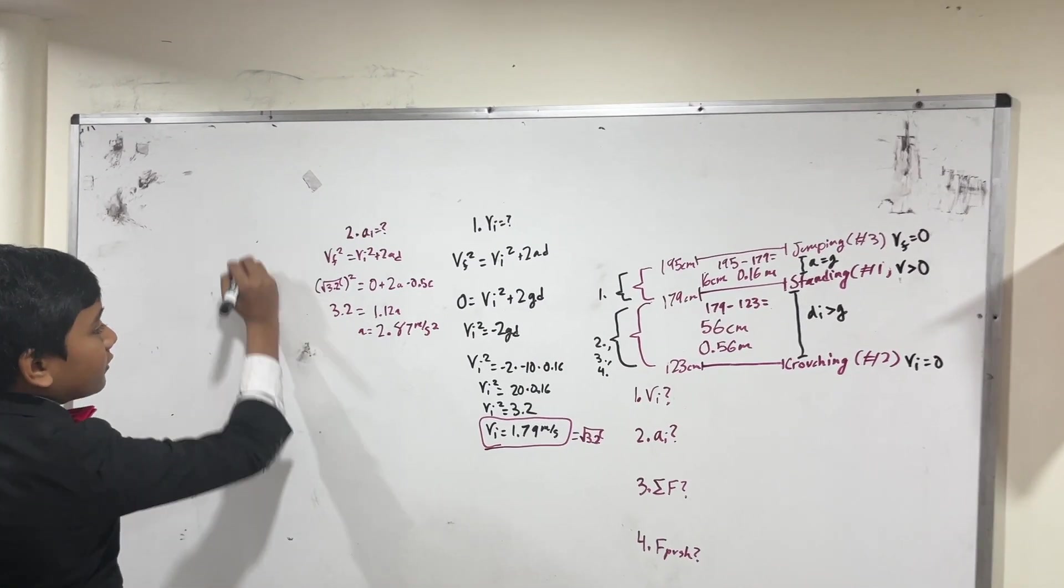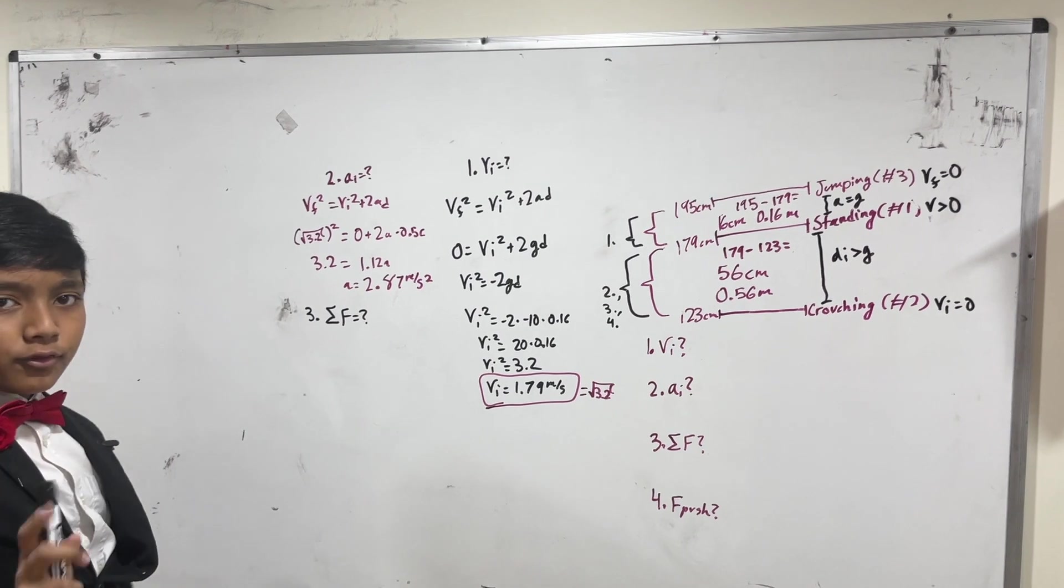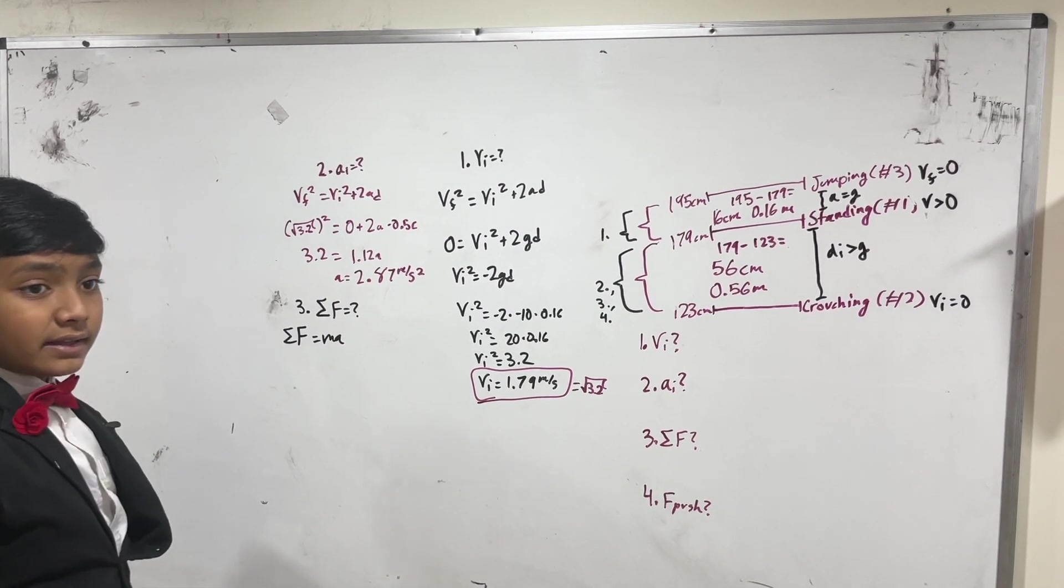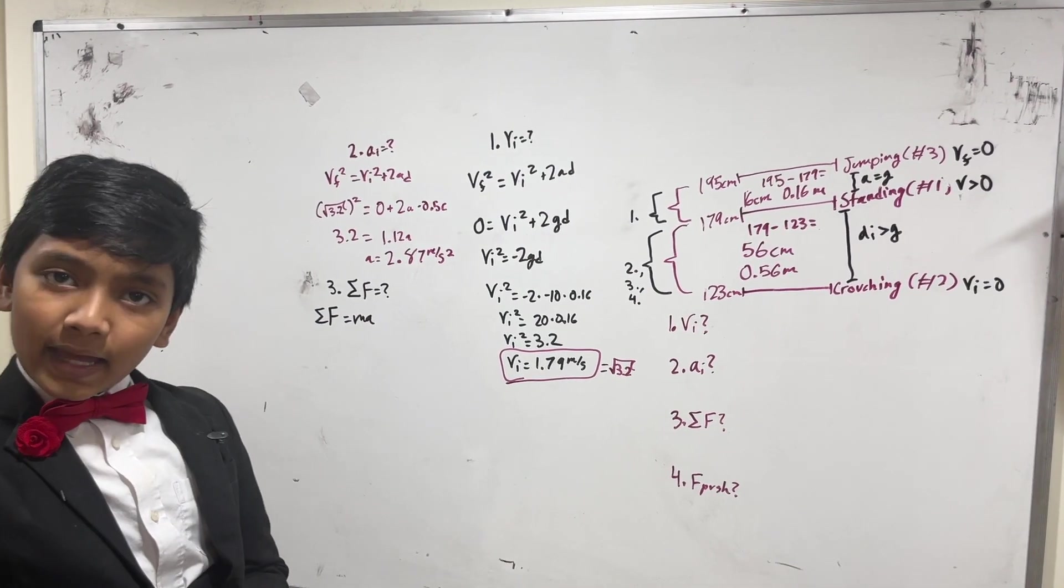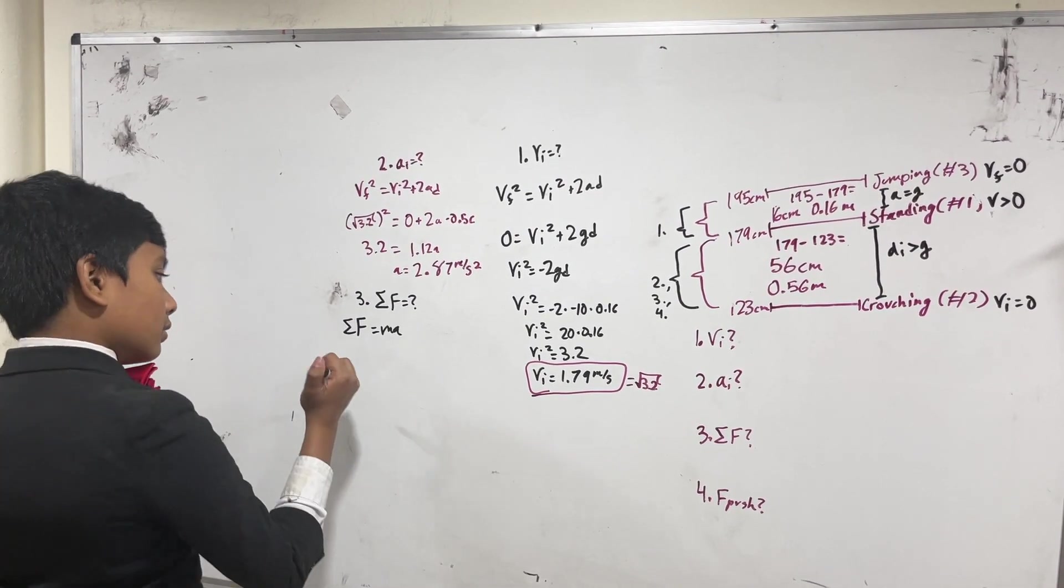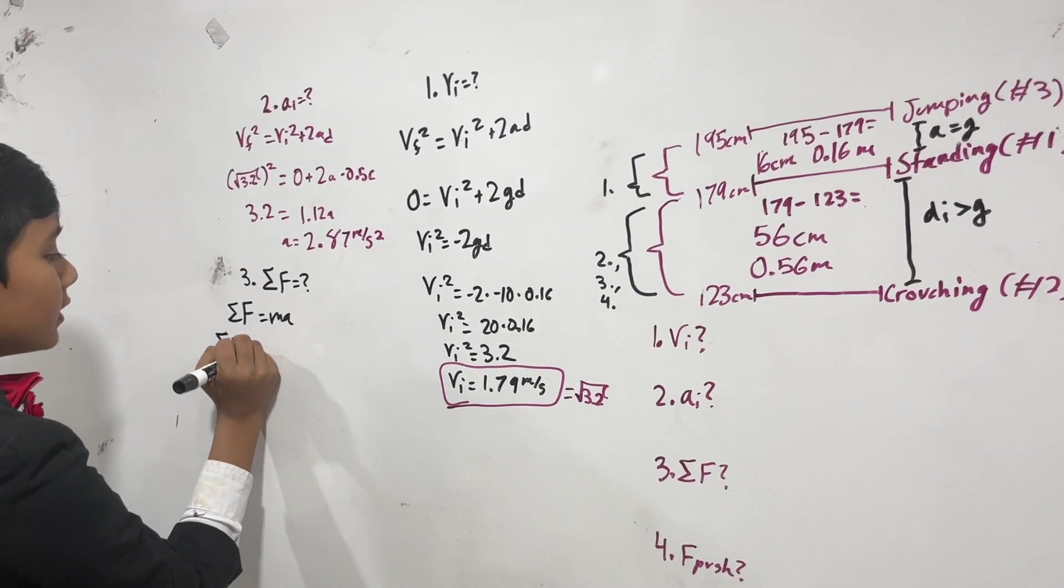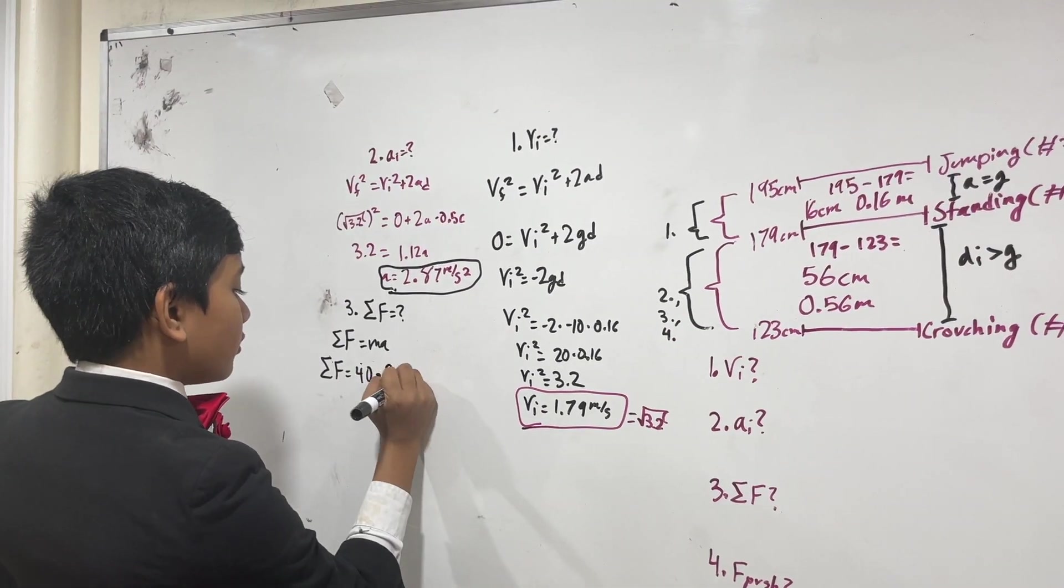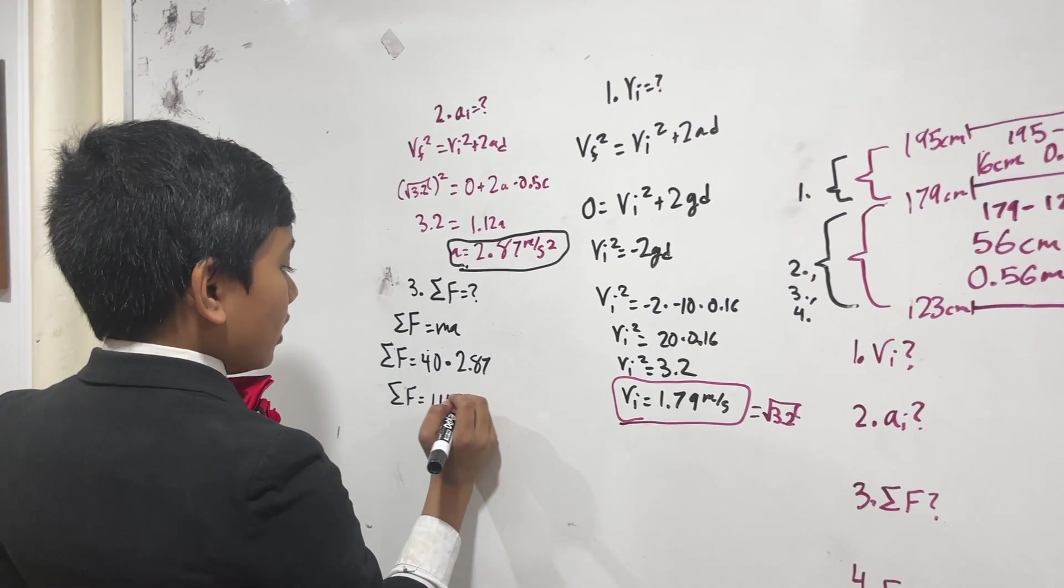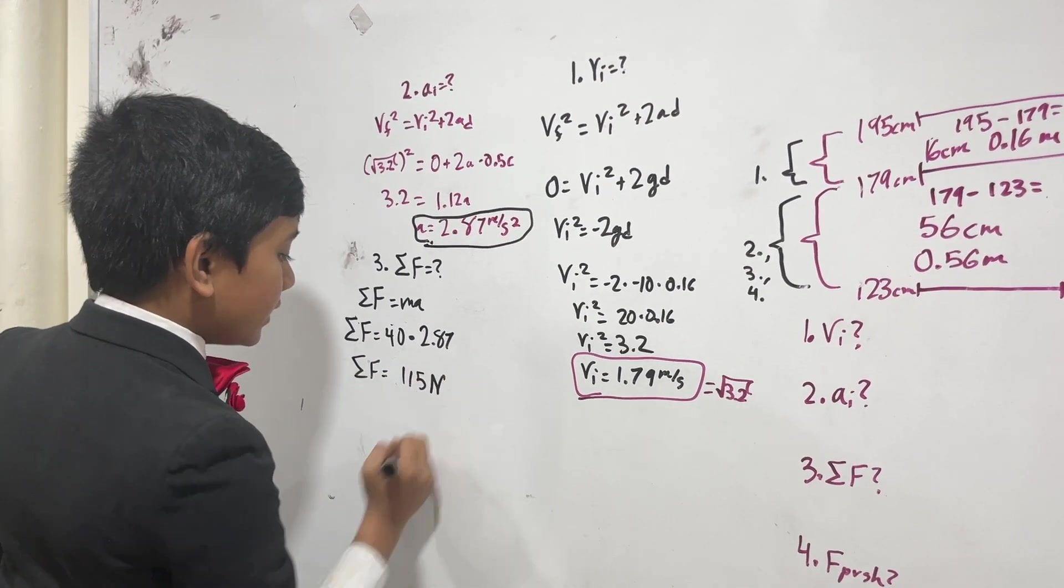For number 3, we're trying to find the net force. The net force is actually really easy. The net force is equal to mA. And if I didn't tell you before, I'm 88 pounds right now. That equates to about 39.9 kilograms. We have sigma F is equal to 39.9 times 2.87 together gives us 114. Multiplying that all together gives us 115 Newtons.